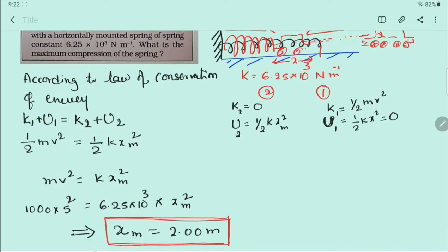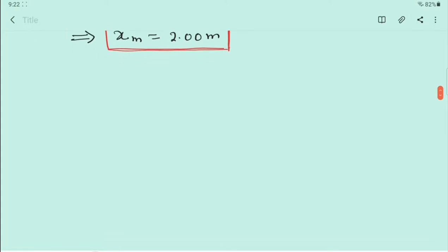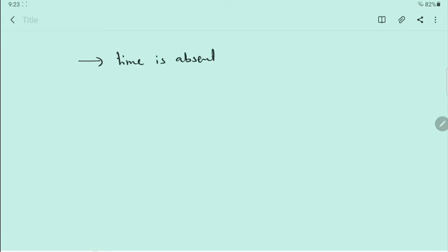Now, a few points to note about the law of conservation of energy and how it is converting. One thing is absent from this problem — time. Time is absent. How long is the spring being compressed was not given. To find time, Newton's second law would be required, but that temporal information is not provided here.